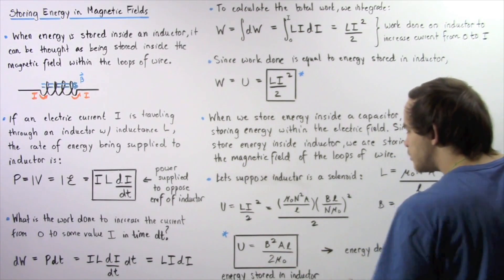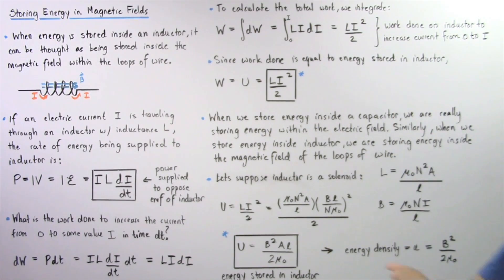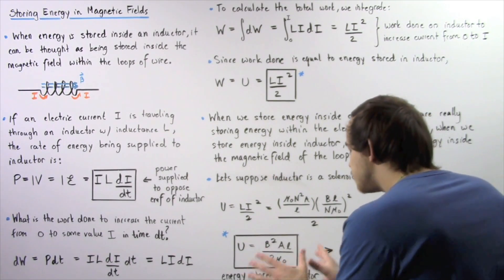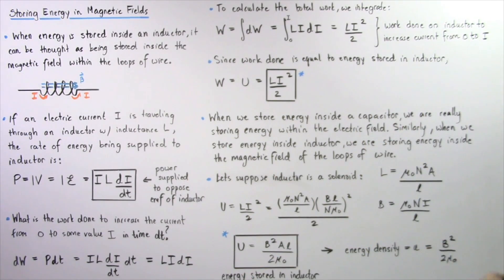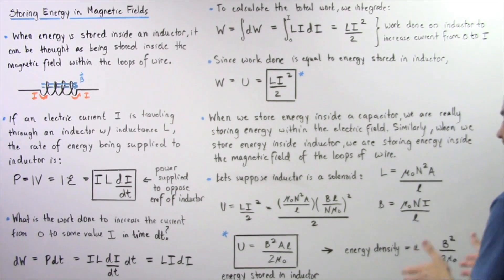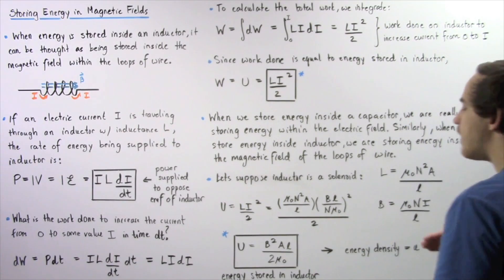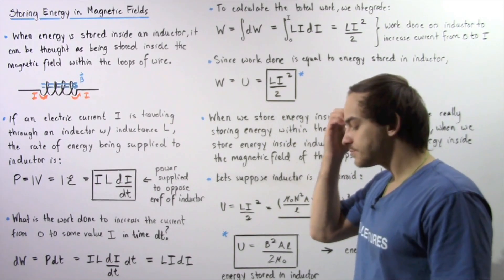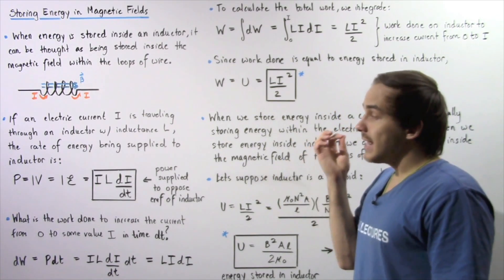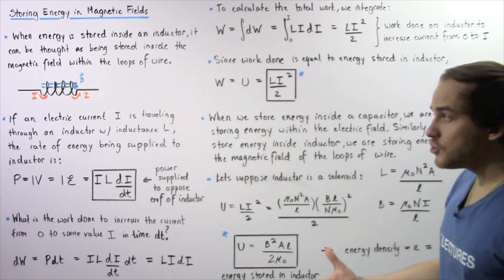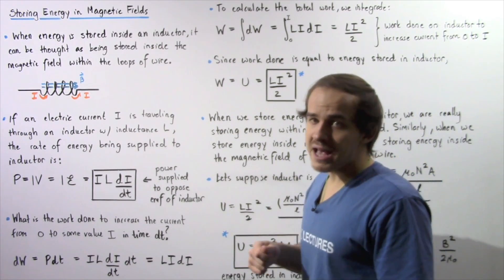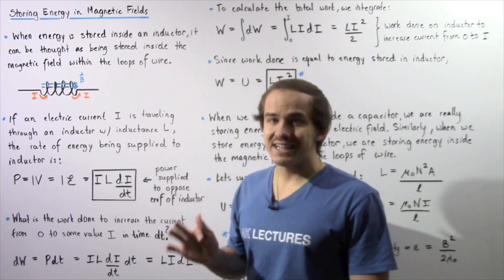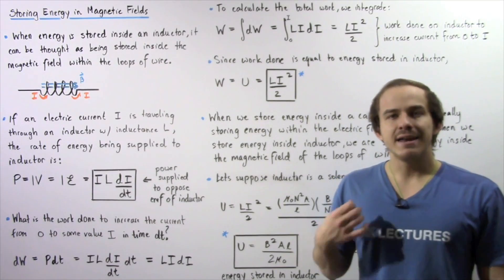So we took the energy equation and divided by the volume A·l to obtain the energy density. This is the energy stored inside the magnetic field inside our solenoid, and the energy density u equals B²/(2μ₀) is simply the energy divided by the volume inside our solenoid. In the same exact way that energy is stored within the electric field inside a capacitor, energy is stored within the magnetic field inside an inductor.